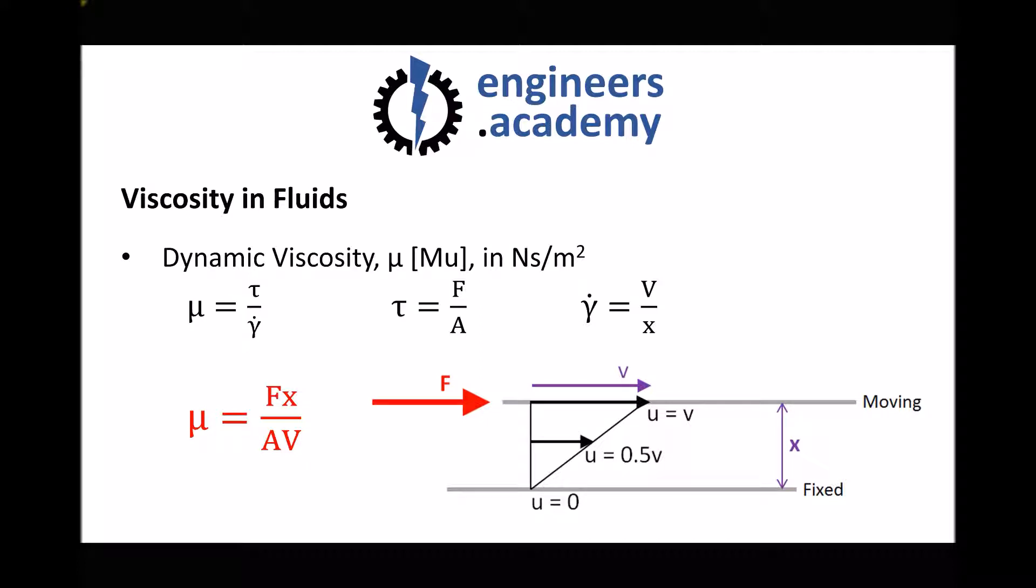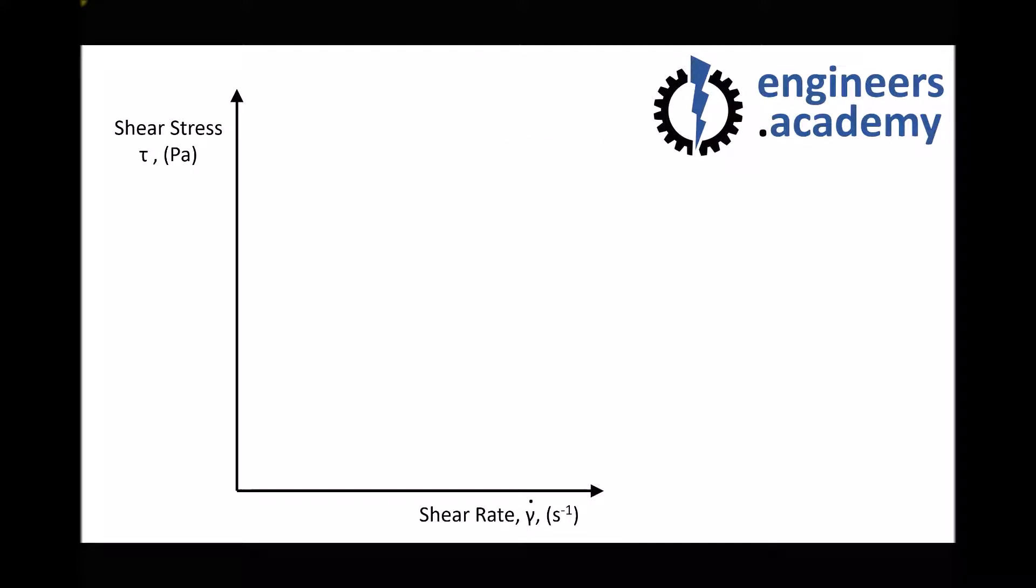So this is a useful starting point for understanding the differences between Newtonian and non-Newtonian fluids. Pictured on the screen here, we have some axes, and on the y-axis we have shear stress τ measured in pascals, and on the x-axis we have shear rate γ̇ in seconds to the minus one.